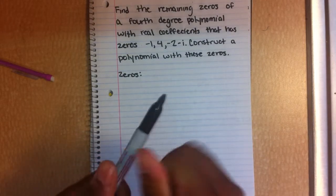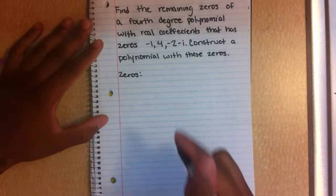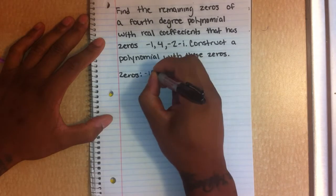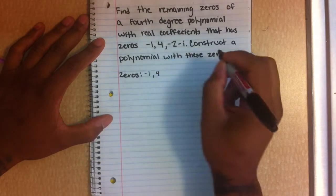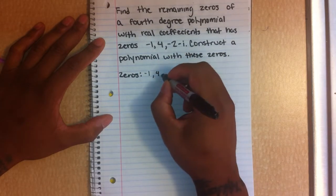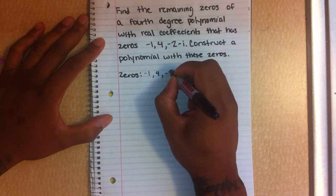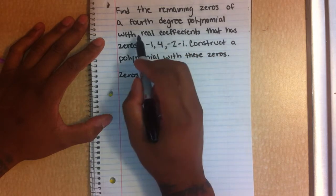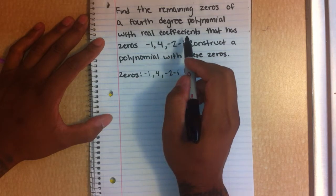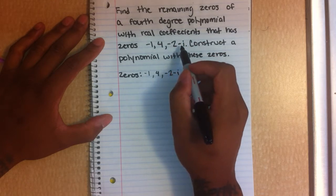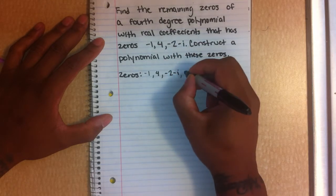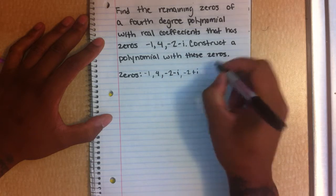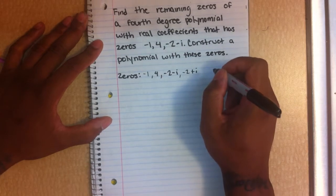The first step is to find the remaining zeros. Our zeros are negative 1, 4, and negative 2 minus i. And since we have real coefficients, if negative 2 minus i is a zero, then negative 2 plus i is also a zero.